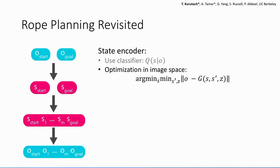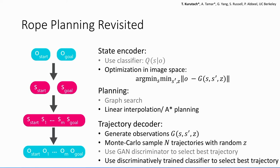So if we revisit the rope example, there were slight modifications. In the state decoder, we searched for the best state rather than using the classifier. And the planning there was we used linear interpolation or A-star planning. And finally in the trajectory decoder, we find that training a separate classifier can perform better than using GAN discriminator.